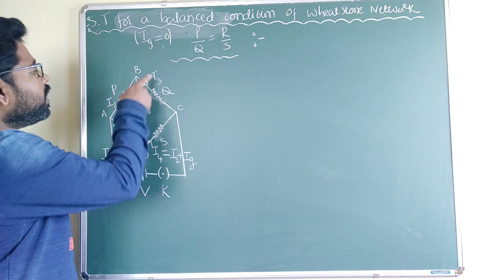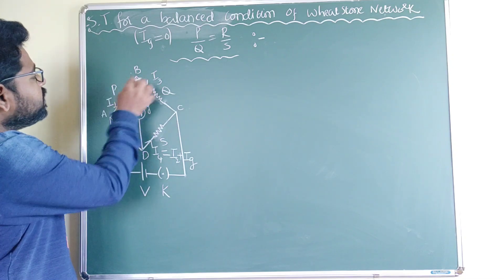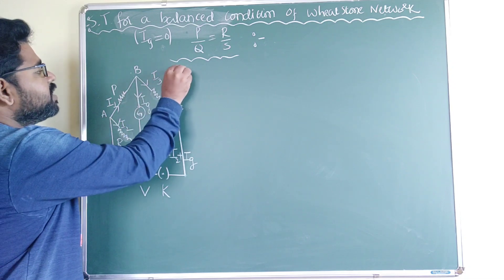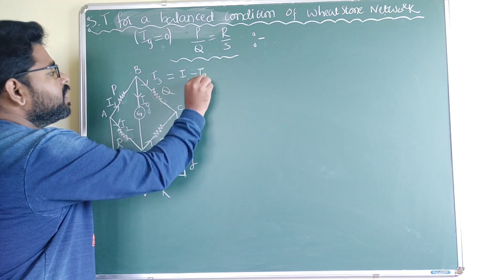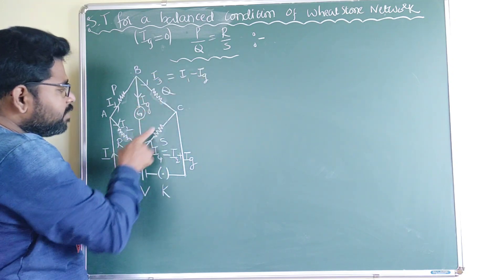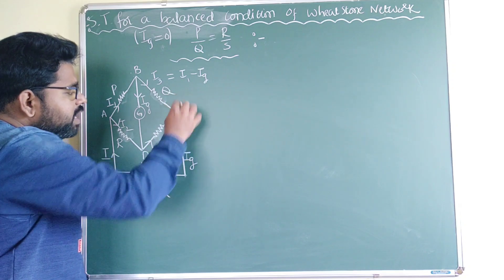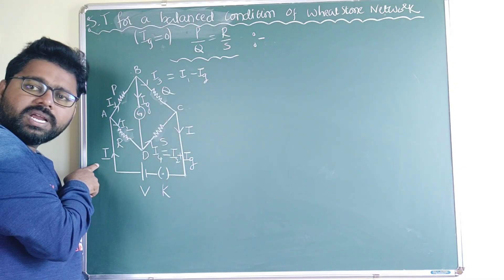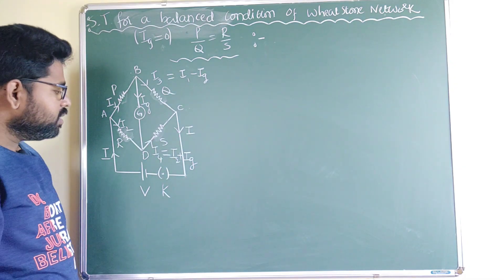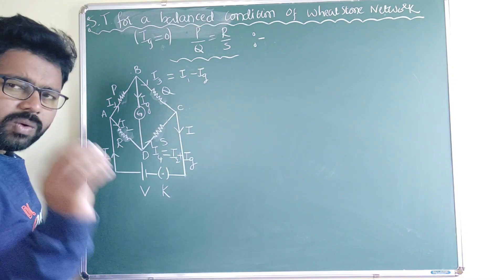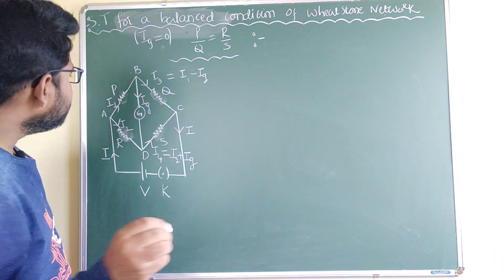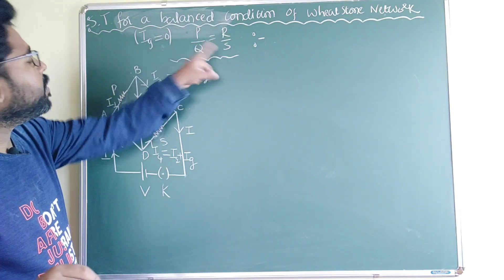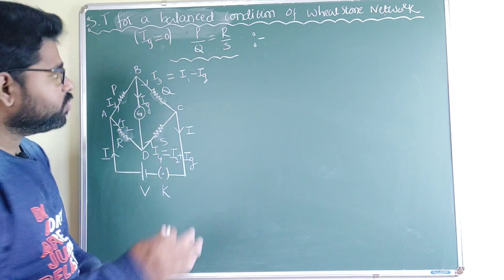The Ig current and I2 current combine at point D and move through DC, which we call I4, where I4 = I2 + Ig. The same currents recombine at point C and return as the original current I entering at point A. So, we have to show that if Ig = 0, then P/Q = R/S.